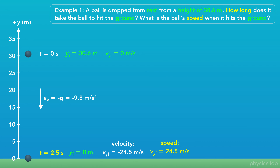So those are the answers: if any object is dropped from a height of 30.6 meters with no initial velocity, it will always take 2.5 seconds to hit the ground with a speed of 24.5 meters per second. Questions like this are common, where we have to find some values at one point in the motion, usually when the object hits the ground.